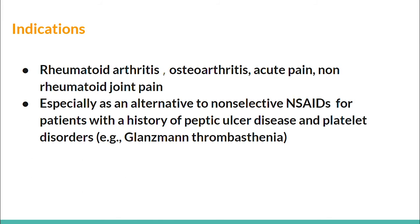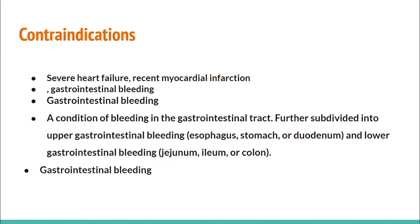Indications for selective COX-2 inhibitors include rheumatoid arthritis, osteoarthritis, acute pain, and non-rheumatoid joint pain — especially as an alternative to non-selective NSAIDs for patients with a history of peptic ulcer disease and platelet disorders such as Glanzmann thrombasthenia. Contraindications include severe heart failure, recent myocardial infarction, and gastrointestinal bleeding. Gastrointestinal bleeding is subdivided into upper GI bleeding involving the esophagus, stomach, and duodenum, and lower GI bleeding involving the jejunum, ileum, and colon.